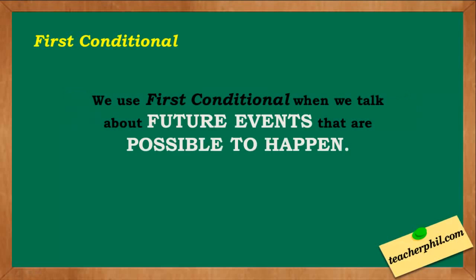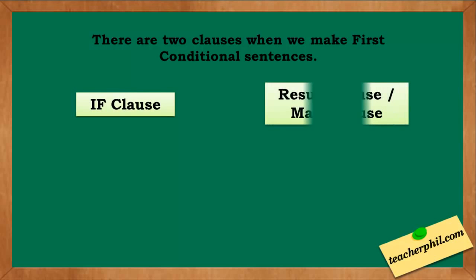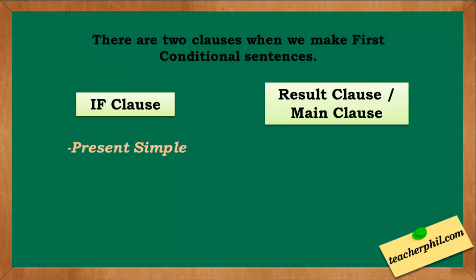First conditional. We use the first conditional when we talk about future events that are possible to happen. There are two clauses when we make first conditional sentences: the IF clause and the RESULT clause, which is also the main clause. The IF clause is in the present simple tense, while the RESULT clause is in the future simple tense.